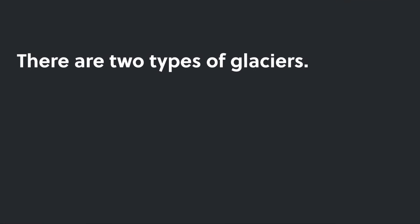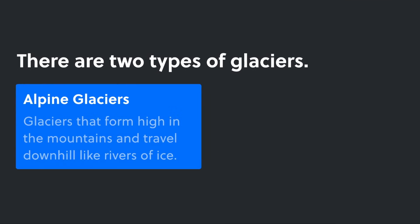There are generally two types of glaciers. First, we have alpine glaciers, which form high up in the mountains and travel downhill like rivers of ice.